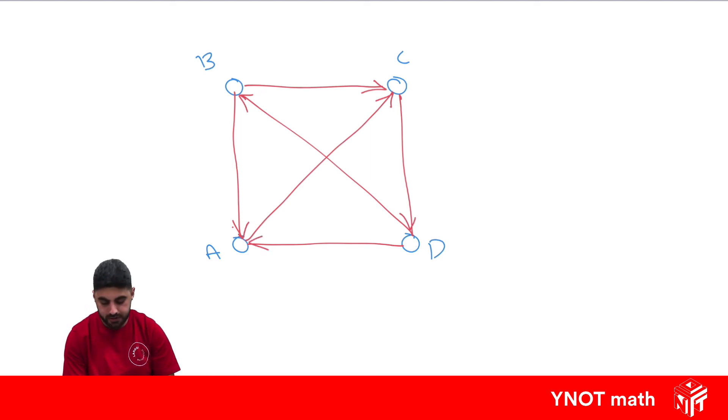When we have a directed network, we don't just say the vertices have a degree. They can have an in-degree and an out-degree. So if we're talking about degrees, A would have a degree of 3. But because it's a directed network, the language changes a little bit.